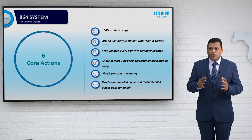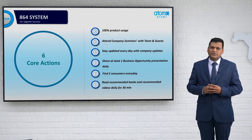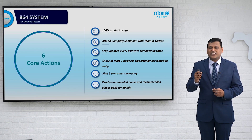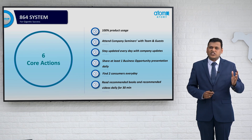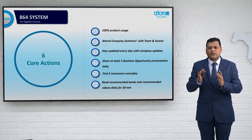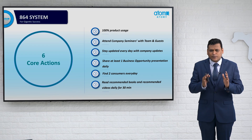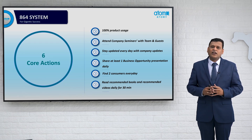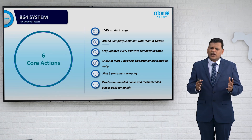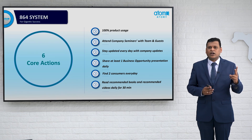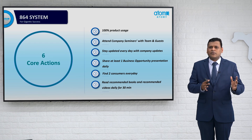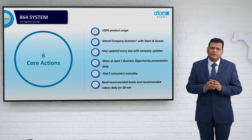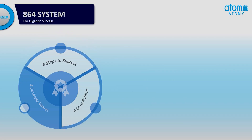Have a target of at least two new consumers every day and that will make you more successful. The last core action is knowledge. Yesterday, Mr. Mukesh talked about how knowledge helped him multiply his earning — earlier he earned eight thousand per month and after becoming an MBA he earned eight thousand per day, a 30-times multiplication possible only through knowledge. Spend at least 30 minutes every day gaining knowledge by reading books or watching YouTube videos.